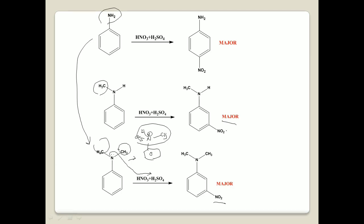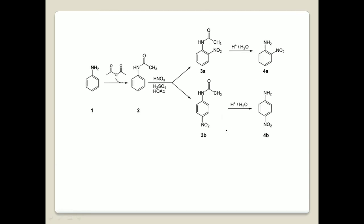So in the remaining two compounds — N-methylaniline and N,N-dimethylaniline — meta is the major product. Now, how to get para-nitroaniline as the major product? Aniline on acylation in the presence of acetic anhydride is converted to acetanilide. This acetanilide is less basic because the lone pair of electrons on nitrogen is involved in conjugation with the C=O group, which is an electron-withdrawing group.